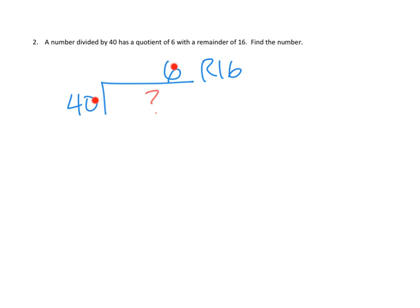Like, when we do our checking process, we multiply these numbers, and then add this number, and then we get this number. And in this case, we actually really want to get this number, because we don't know what it is.